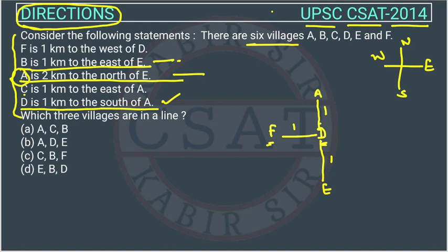Now we can use the second statement: B is 1 kilometer to the east of E. Since we have plotted E, we place B to the east of E, 1 kilometer away. Then, C is 1 kilometer to the east of A — so C is placed to the east of A, also 1 kilometer away.